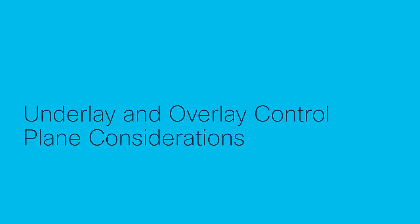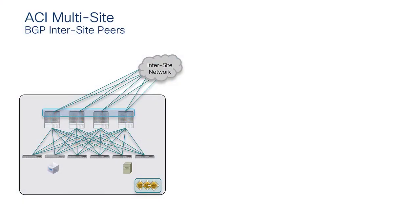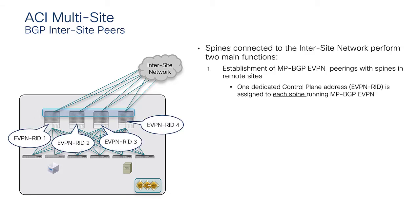Let's look at the underlay and overlay control plane in detail. The goal of the multisite architecture is to build a hierarchical underlay design with tight control over which prefixes are exchanged between sites. The key addresses exchanged are the EVPN Router IDs — loopbacks assigned from MSO to each spine in a multisite domain. With four spines in a site, four /32 prefixes are needed, one per spine.